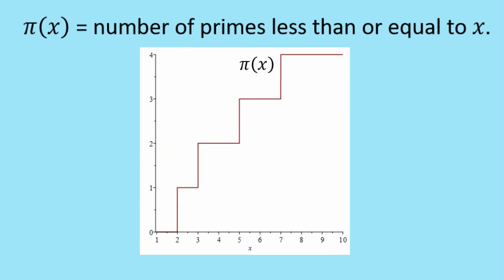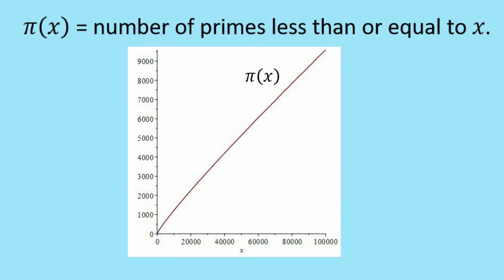So let's have a look at a chart or a graph of π(x) versus x. And you can see here how it jumps at 2, it jumps at 3, 5 and 7. And here's another graph of π(x), but now looking at much larger values of x.